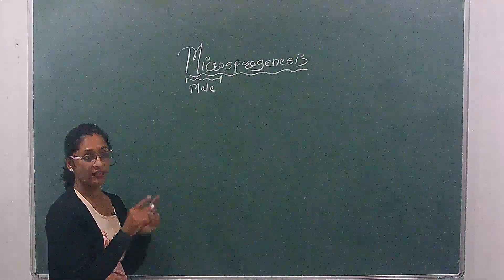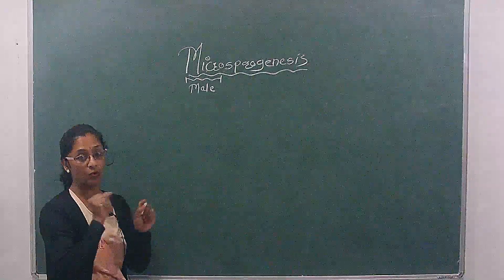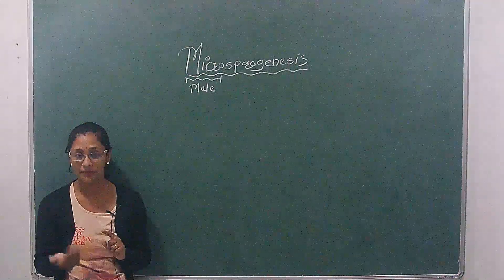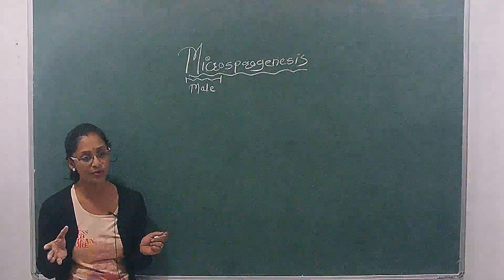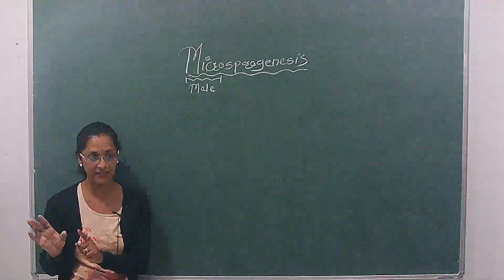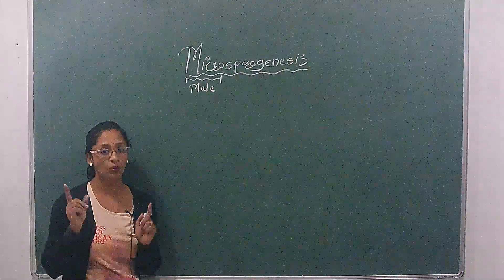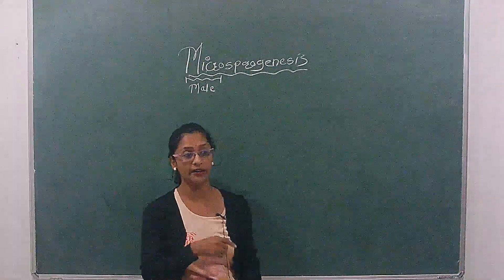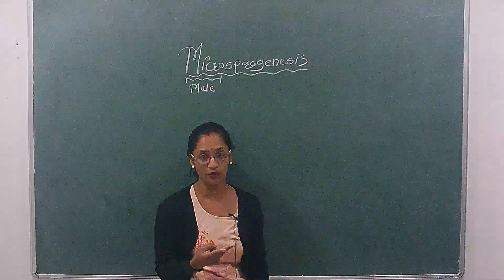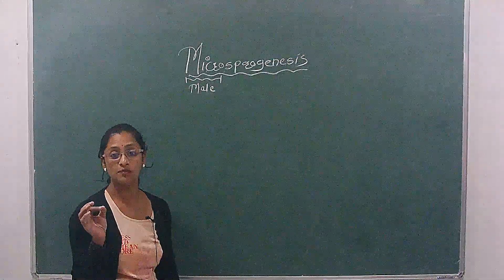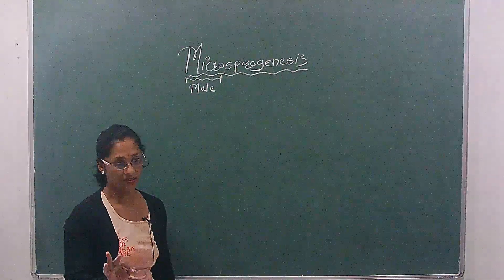So today we start with anther. Anther can be monothecous or dithecous. Most common in angiosperm plants is dithecous, also called bithecous. This means two lobes present. Each lobe contains how many pollen sacs? Two pollen sacs. Pollen sac is also called microsporangium.